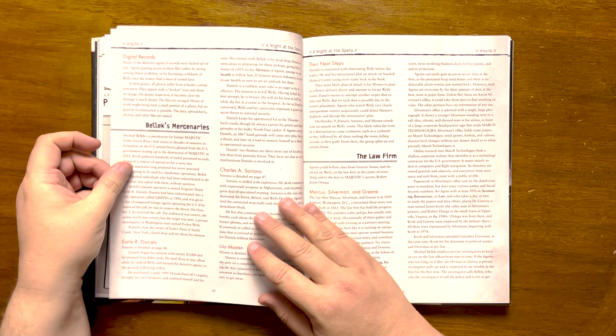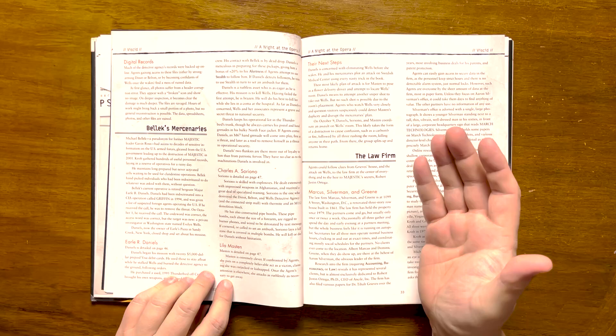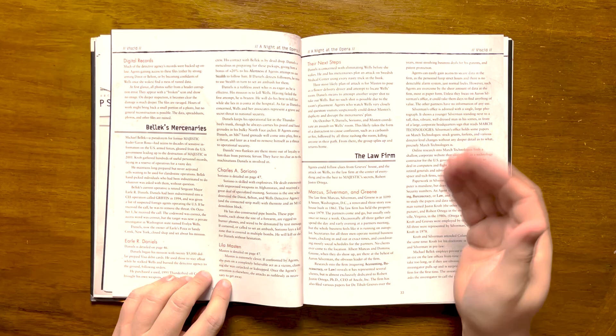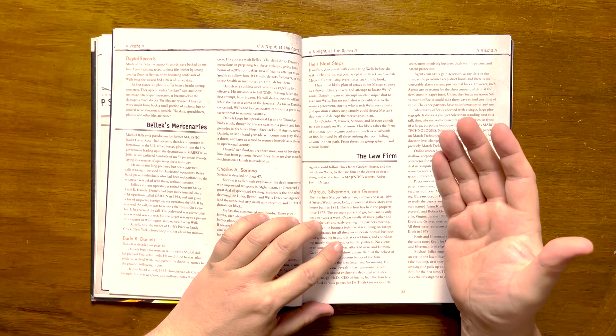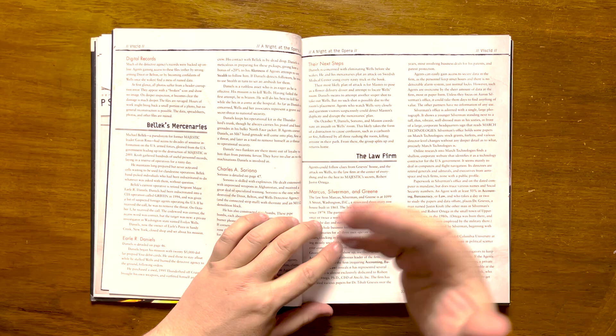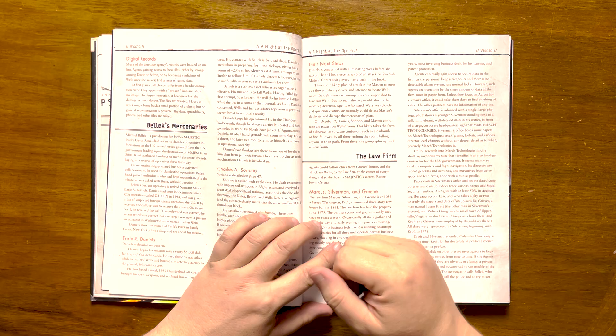Following this is information on Bellic's mercenaries. They consist of three people: Earl R. Daniels, a ruthless asset who is a former CIA operative, and retired Sergeant Major Charles A. Soriano, an Afghanistan veteran and specialist in improvised weapons and explosives, and Lila Maston, a former US Army sergeant. After their failed attempt to kill Wells, their next plan of action is for Maston to pose as a flower delivery driver, to locate her room and attempt another sniper shot. If this plan is thwarted, they plan to launch an assault in her room, killing anyone in their path.